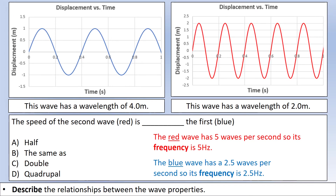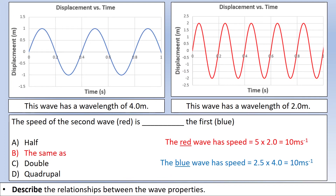Let's now compare the speed of the two waves. We're given wavelengths of 4 meters and 2 meters, along with the frequencies we just calculated. For the red wave: 5 Hertz times 2 meters equals 10 meters per second. For the blue wave: 2.5 Hertz times 4 meters equals 10 meters per second. So the correct answer is that both waves have the same speed.